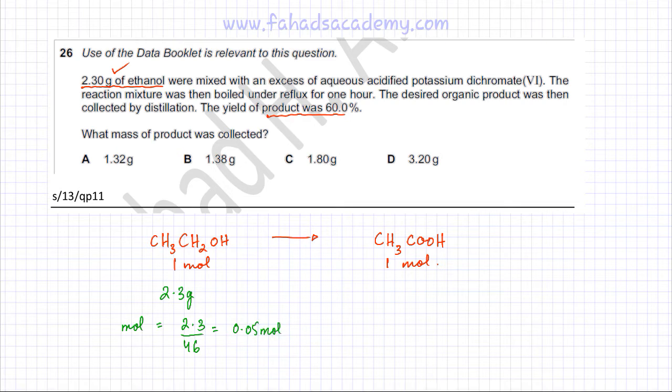Now the ratio in which ethanol and ethanoic acid react is 1:1. One ethanol produces one ethanoic acid. So 0.05 moles of ethanol are going to produce exactly the same amount. The amount of ethanoic acid that would be produced is 0.05 moles.